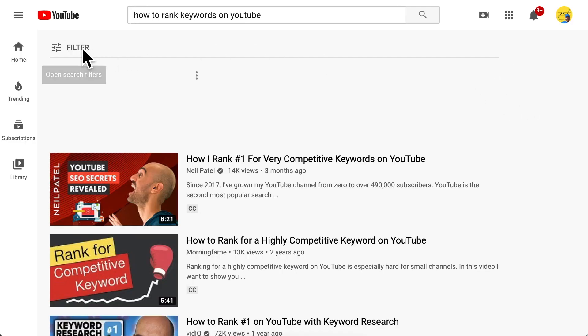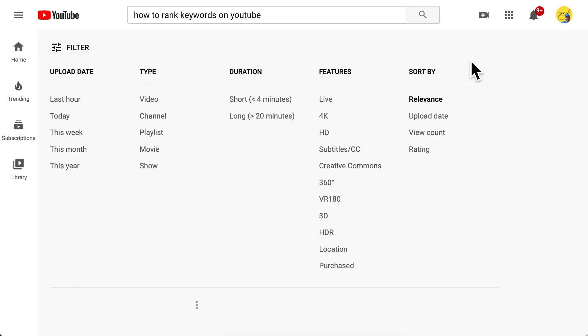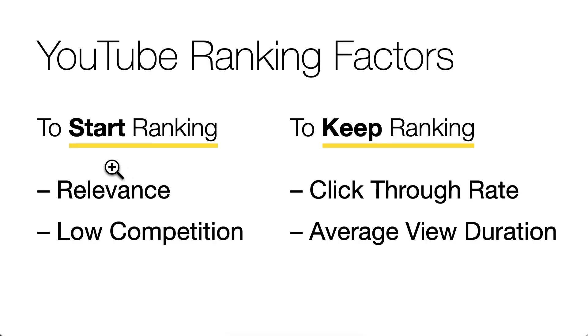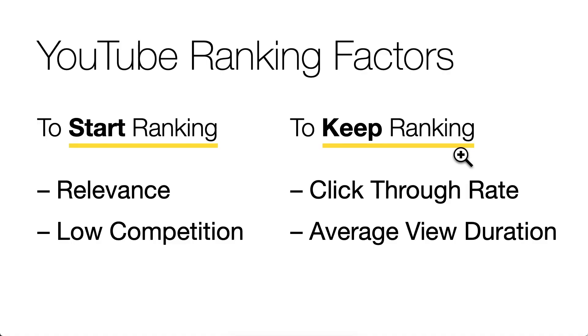Have a close look at the search results on YouTube. In the corner we have a filter, and when we open it we see that all videos are sorted by relevance. So obviously relevance is an important factor to rank your videos on YouTube. The YouTube ranking factors are relevance and low competition to make your video start ranking, and to keep it ranking not just in the first few days but for months and years to come. Click-through rate and average view duration are the other two most important ranking factors.